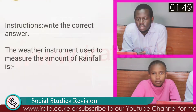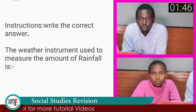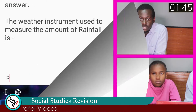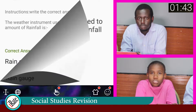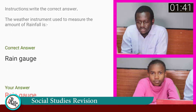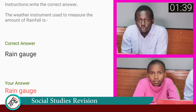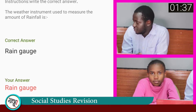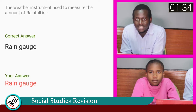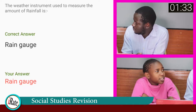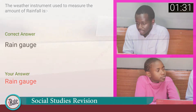Question number six: The weather instrument used to measure the amount of rainfall is? The correct answer is rain gauge — it is the instrument used to measure the amount of rainfall. The student is correct. What are the units for measuring rain? The units used are millimeters.